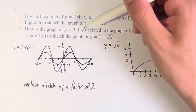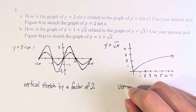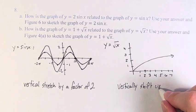And here, we have 1 plus the square root of x. So adding 1 to your function means we are vertically shifting. It's positive, so it's up 1.